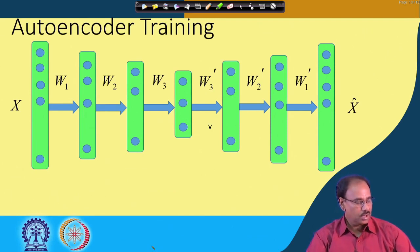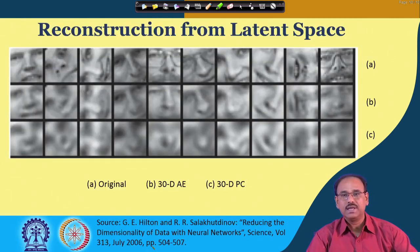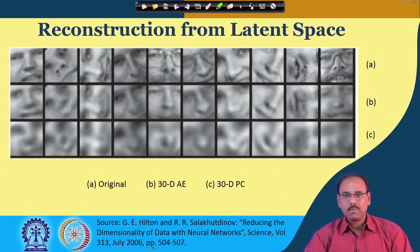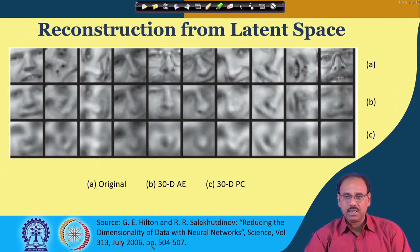Let me stop today's lecture here. We will next talk about the training algorithms of autoencoders. The training will use back propagation, and the loss function for back propagation training will be the sum of squared errors. Thank you.